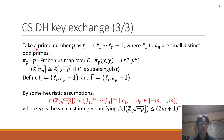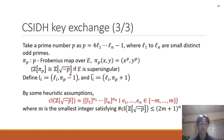First, we take a prime number p at this equation, where l_1 to l_n are small distinct odd primes. And let π_p be the p-Frobenius map over E. There, if E is supersingular, Z[π_p] is isomorphic to Z[√(-p)]. And we define l_i as the ideal generated by l_i and π_p minus 1, and l_i-bar as the ideal generated by l_i and π_p plus 1.